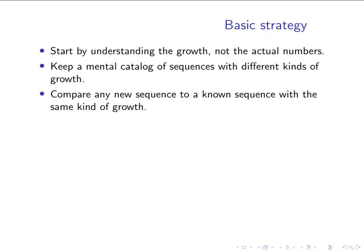Our strategy is going to focus on looking at the growth between terms, not worrying about the actual numbers, as the first step in our analysis. The second part is to categorize in our mind the different kinds of growth rates we see. We saw an example where terms differed by a constant, one where they differed by increasing odd numbers, and one where they doubled every time. When we see those growth rates again, we'll know the sequence is related to ones we've already seen.